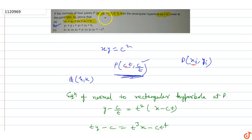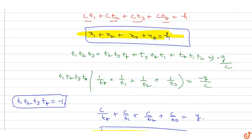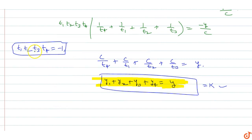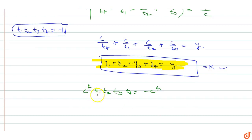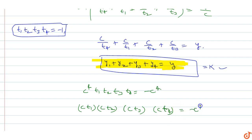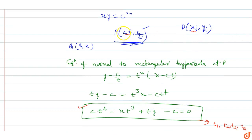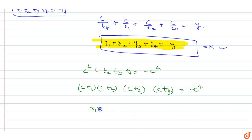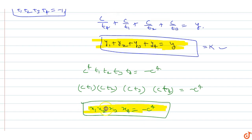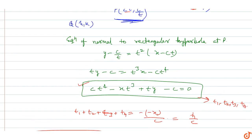Now proving x₁x₂x₃x₄ = minus c⁴. We know the product of roots t₁t₂t₃t₄ = minus 1. Multiplying both sides by c⁴: c⁴·t₁t₂t₃t₄ = minus c⁴. Writing c·t₁, c·t₂, c·t₃, c·t₄ separately gives ct₁·ct₂·ct₃·ct₄ = minus c⁴. Since ctᵢ are the x-coordinates, x₁x₂x₃x₄ = minus c⁴.